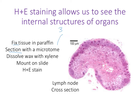The microtome makes really thin sections, around three to five micrometers in thickness. You then have to dissolve the wax with xylene, put it on a microscope slide, and then do your H&E staining. This is quite an involved protocol and we wouldn't have time to do it in the lab, so we're going to give you some pre-prepared sections of various different tissues.